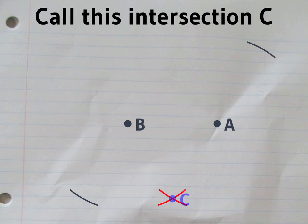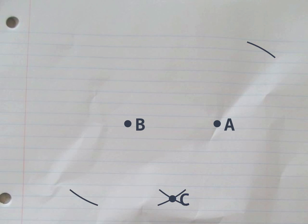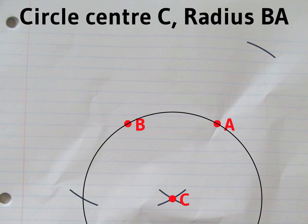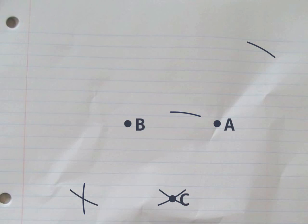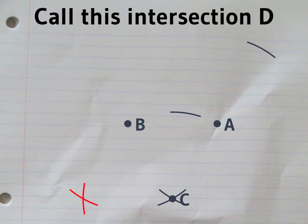We'll call this intersection C. Now draw another circle with the same radius centered on C. We'll call this intersection D.